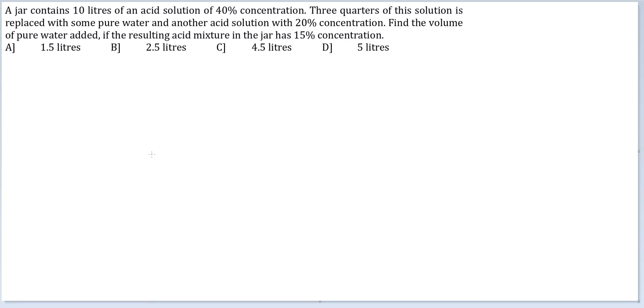Let's look at this question. A jar contains 10 liters of acid solution of 40% concentration. Three quarters of this solution is replaced with some pure water and another acid solution with 20% concentration. Find the volume of pure water added if the resulting acid mixture in the jar has 15% concentration.